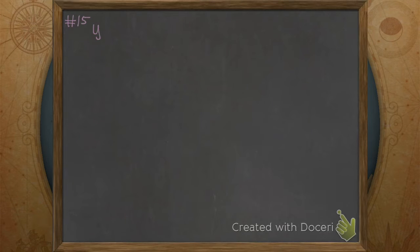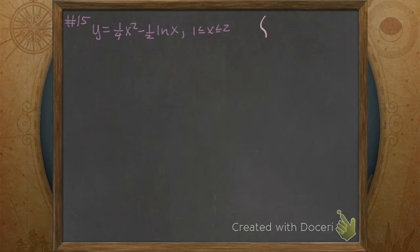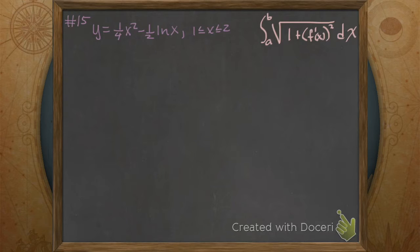Rob picked it because he thought it looked nasty. So let's drop it to the floor. What do we have? The length of a curve. Which curve? Y is equal to 1/4 x squared minus 1/2 the natural log of x, where our domain is 1 to 2. So what do we do? We throw it in the length of a curve integral.